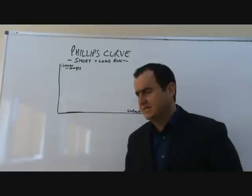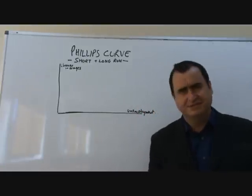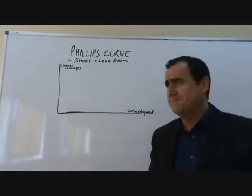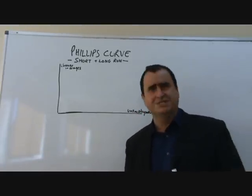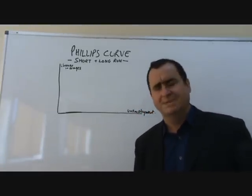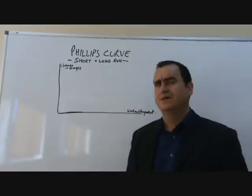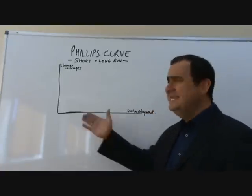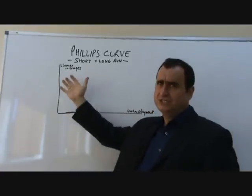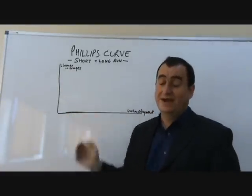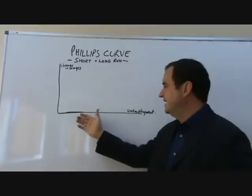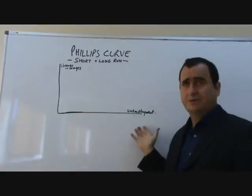Back in the 1950s, Professor Phillips at the Lund School of Economics noticed a connection - a correlation between the speed at which wages rise, or had been rising, and the size of unemployment.